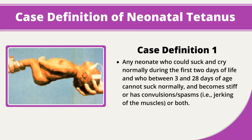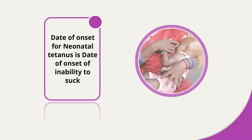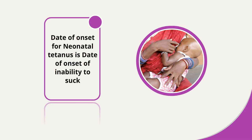A neonatal tetanus case is any neonate who could suck and cry normally during the first two days of life and who, between 3 and 28 days of age, cannot suck normally and becomes stiff, or has convulsions or spasms, or both. Or any neonate who died of an unknown cause during the first month of life. The date of onset for neonatal tetanus is the date of onset of inability to suck.